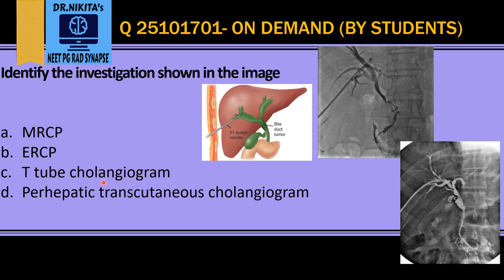Now this is a PTC, that is Percutaneous Transhepatic Cholangiogram. It is percutaneous, meaning it will go through the liver — transhepatic, from the skin into the liver. The catheter goes into a peripheral duct and then images the CBD.